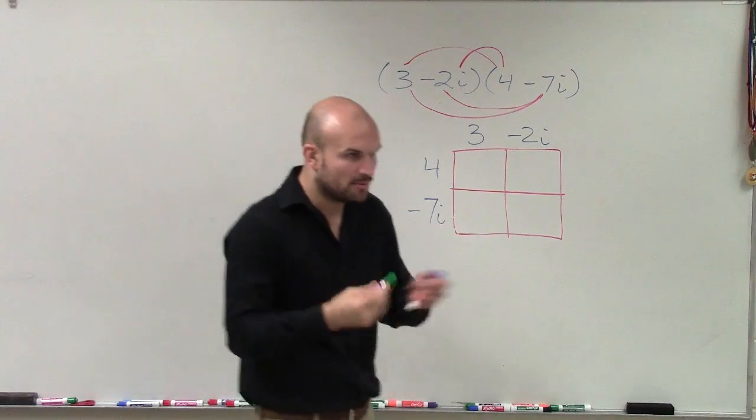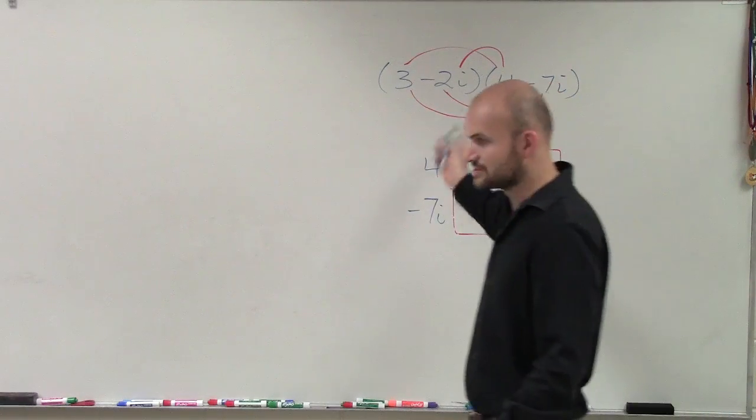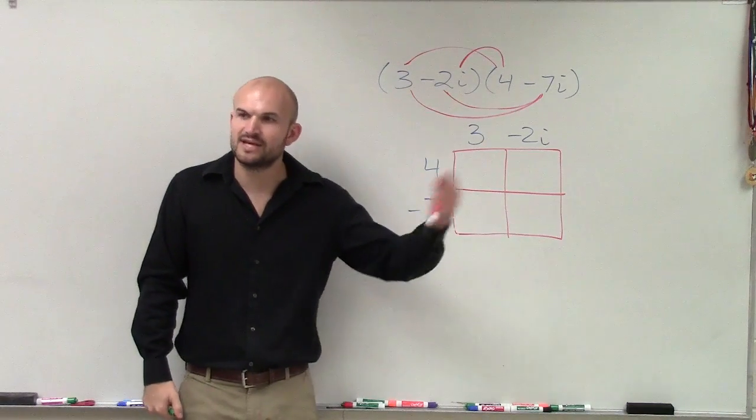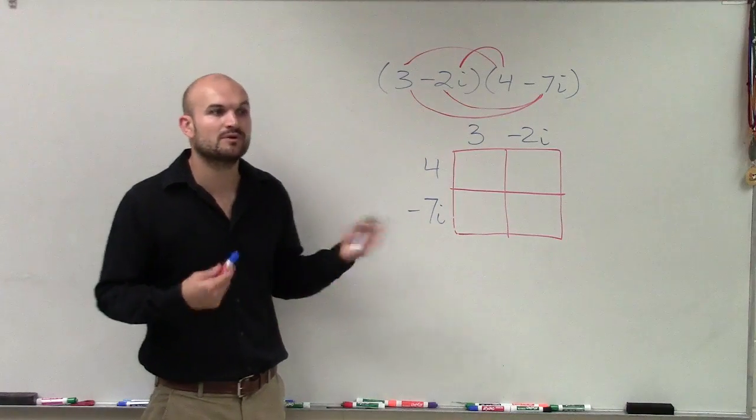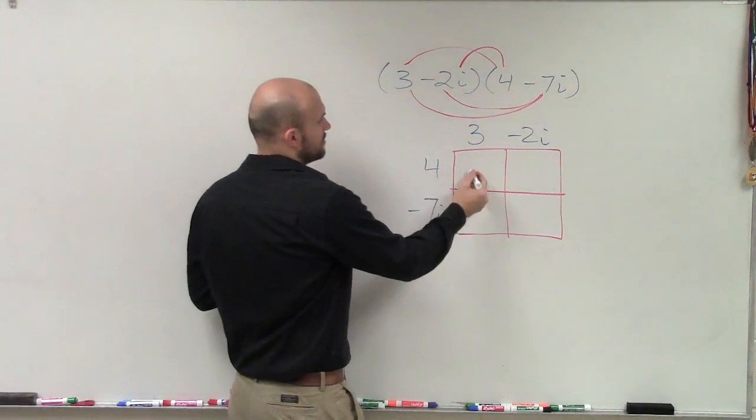Because when we talk about multiplication, multiplication is finding the area of a figure. Even though these look like pretty weird areas that we're talking about because we're talking about imaginary numbers, that's what multiplication is. So what I do is now I just take each rectangle and I find the area. Remember, finding the area would just be length times width. So I do 3 times 4, which is 12. 4 times negative 2 is negative 8i.